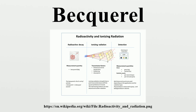Conversion factors: 1 Ci equals 3.7 × 10¹⁰ Becquerels, equals 37 GBq. 1 μCi equals 37,000 Becquerels, equals 37 kBq.